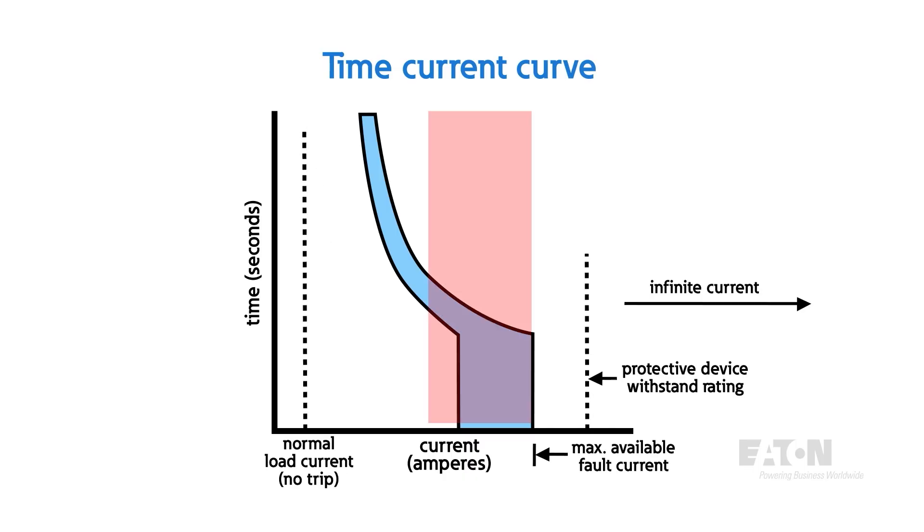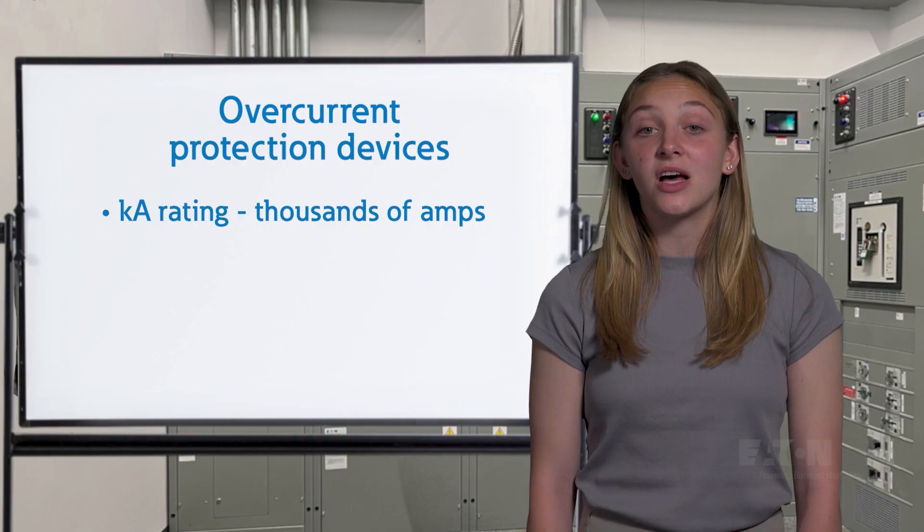If you look carefully, the curve doesn't account for infinite current. That's because there's a limit to how much even protective devices can handle. This is known as the kA rating because this upper limit is usually in the thousands of amps.